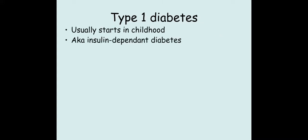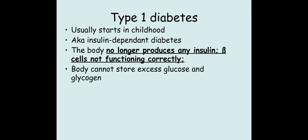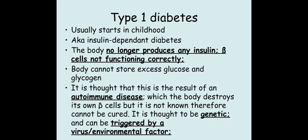Type 1 starts in childhood and is also known as insulin-dependent diabetes. You don't produce insulin anymore, which means that your beta cells within the islets of Langerhans are no longer functioning correctly, and therefore your body cannot store excess glucose. It is thought that this is due to an autoimmune disease where your body has attacked the beta-producing cells as a result of a genetic disorder, normally passed on from one or both parents. It's thought to be genetic but could also be triggered by a virus or environmental factor.